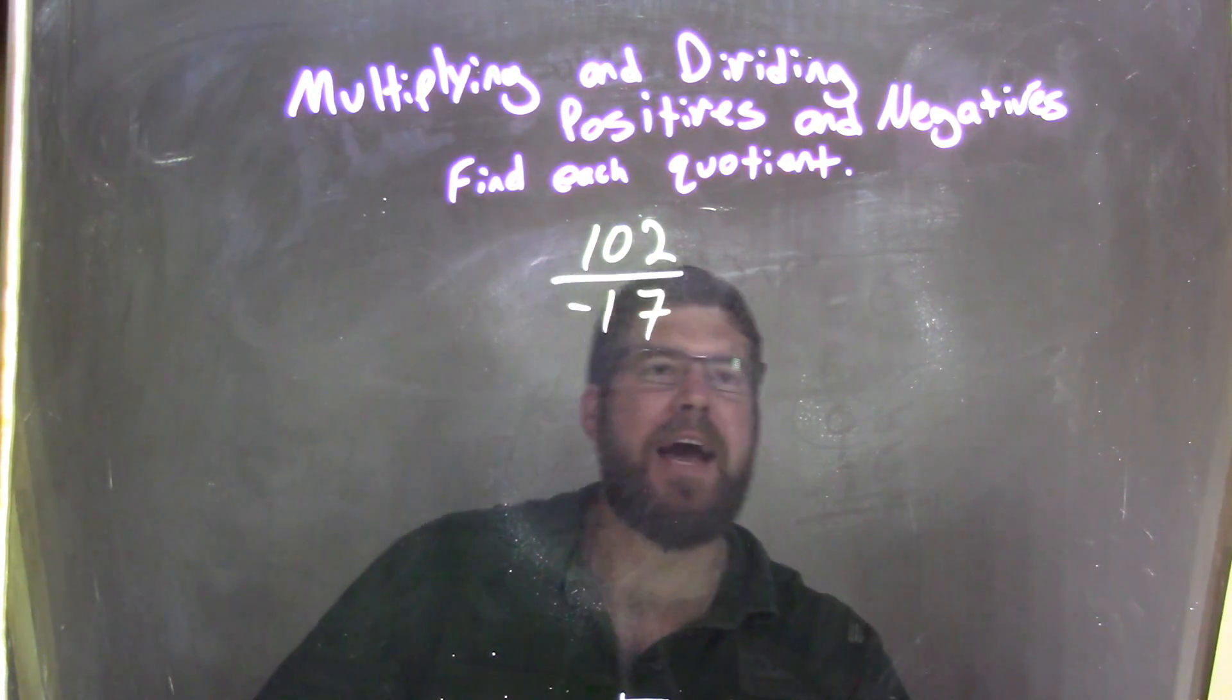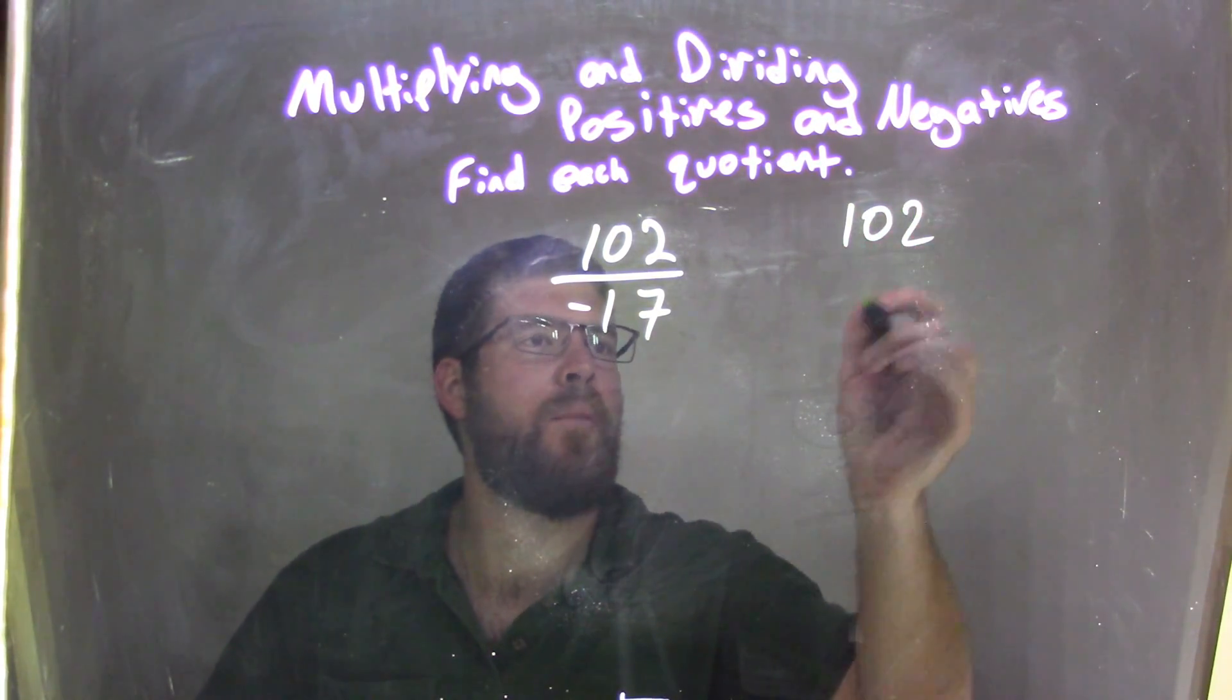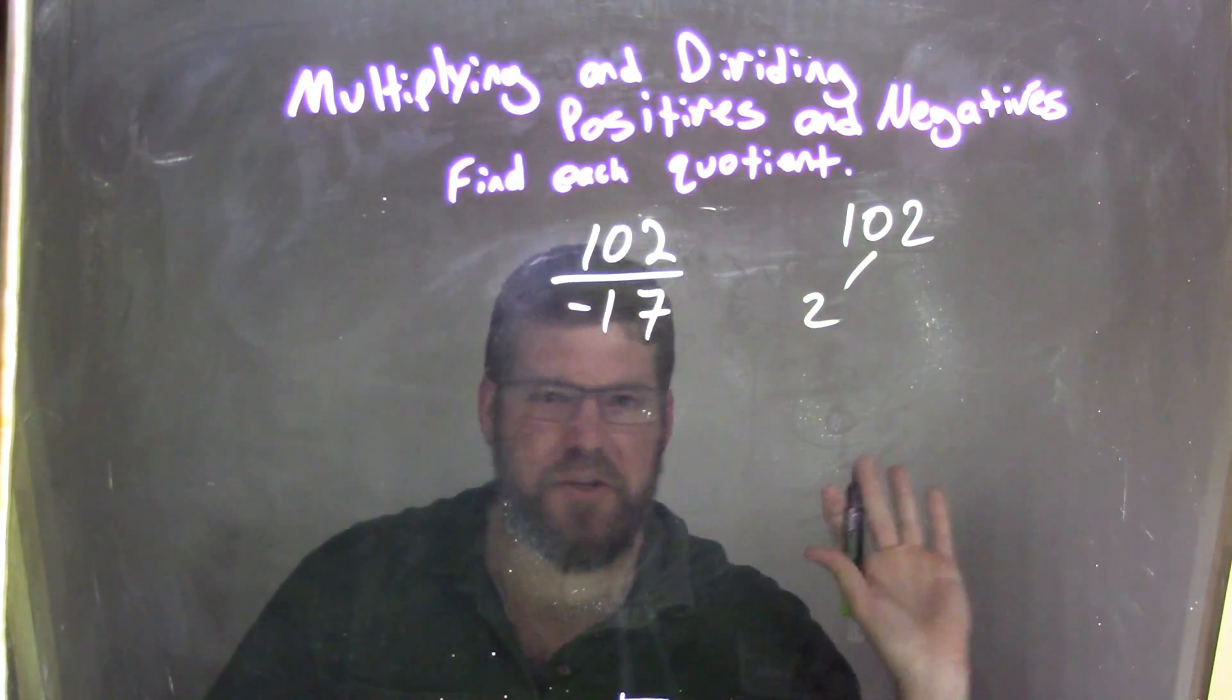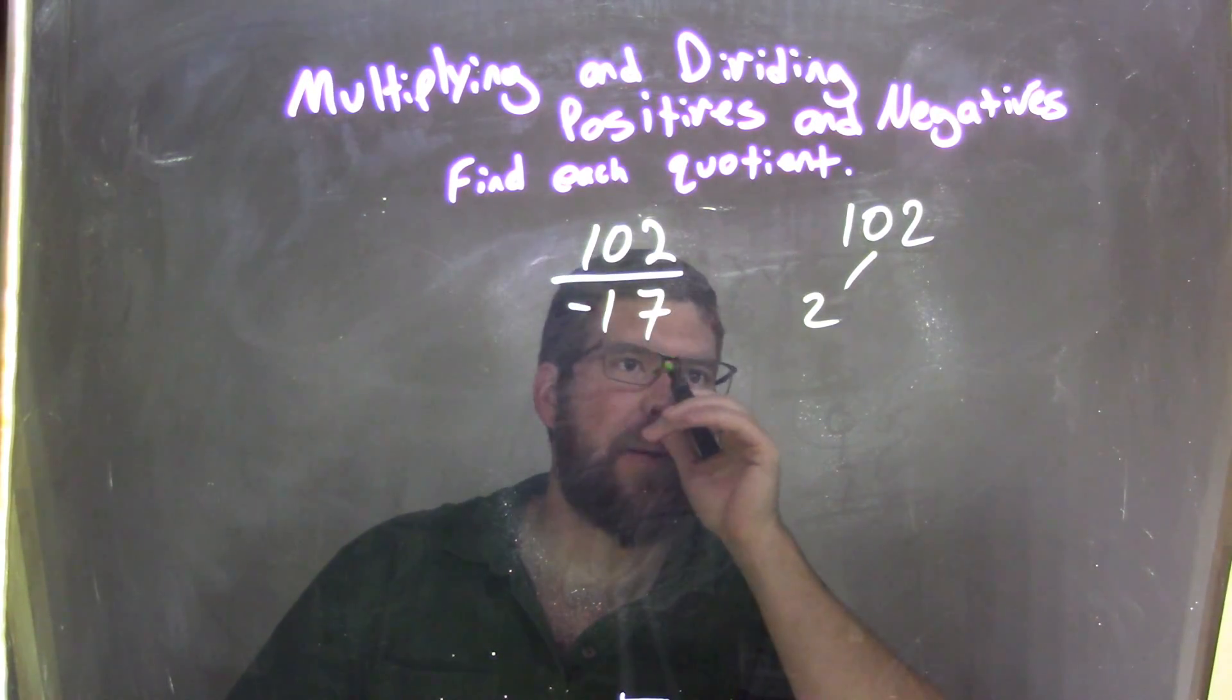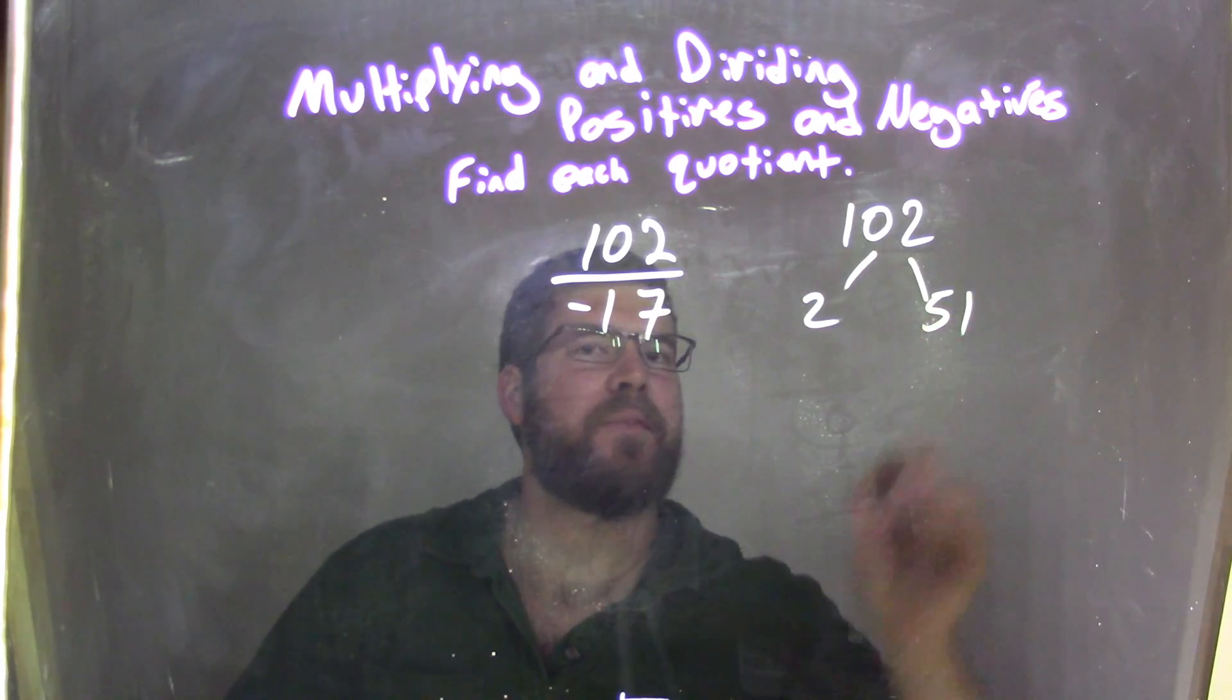So let's just say how can we break down 102? Well, 102, I'm going to do it here on the side. 2, 2 is easy, 2 and what is that? 51.